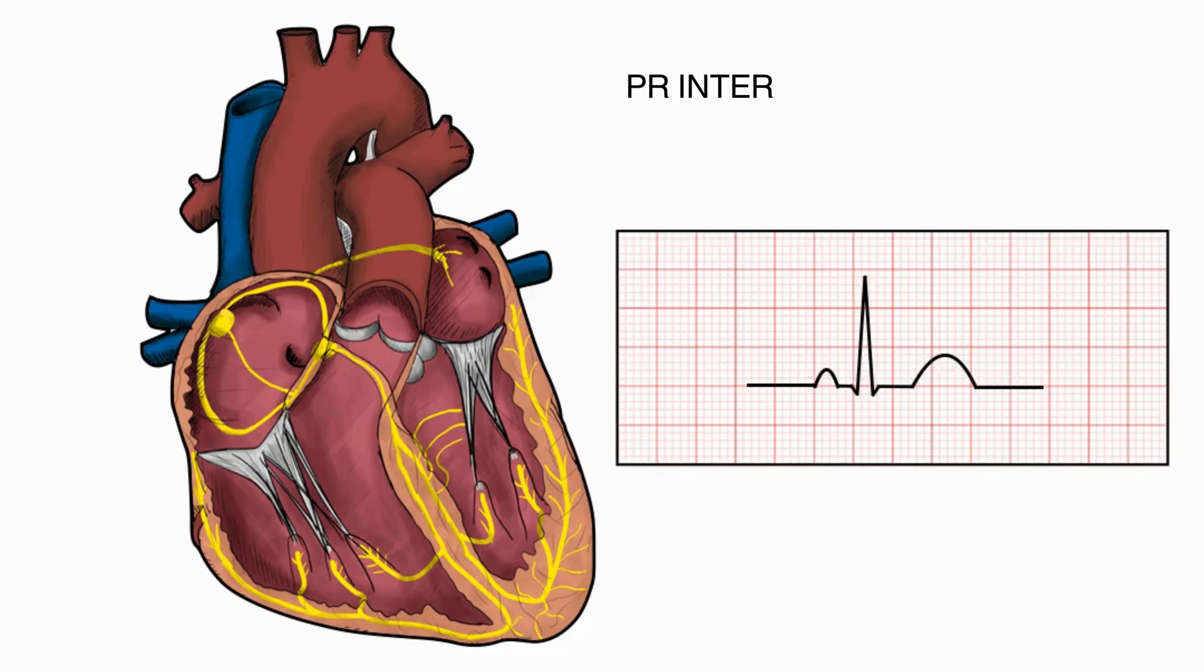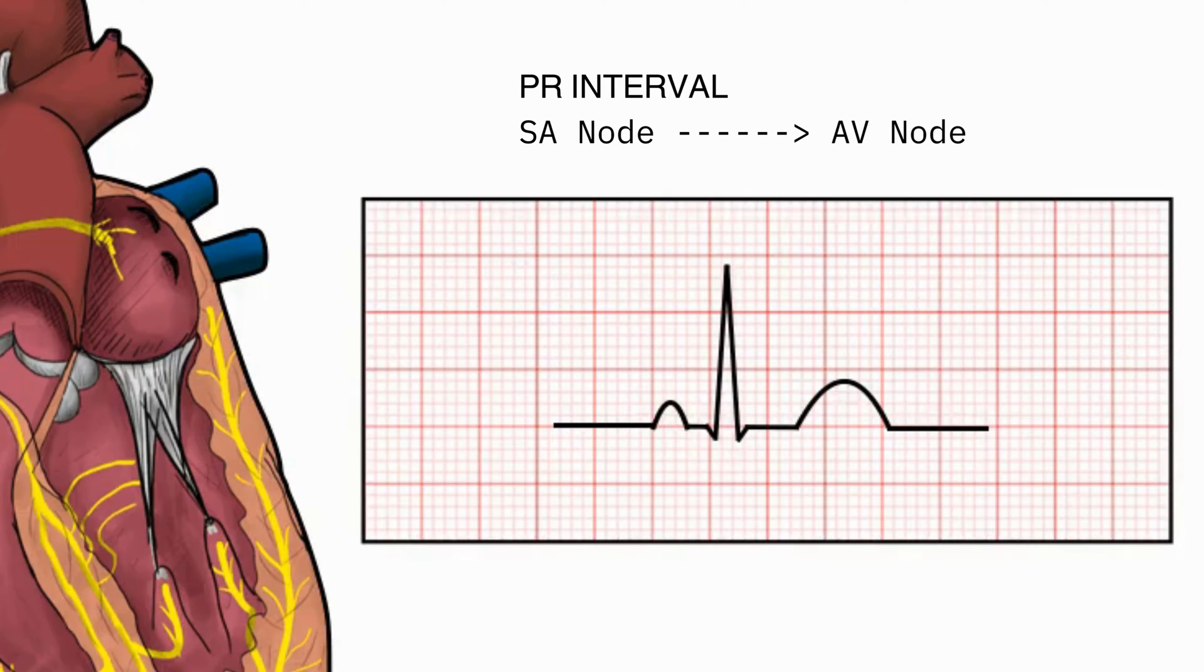For example, the PR interval on an ECG represents the time it takes for the electrical impulse to travel from the SA node to the AV node. If this interval is prolonged, it could indicate a delay in conduction, while a shortened PR interval might suggest faster conduction.